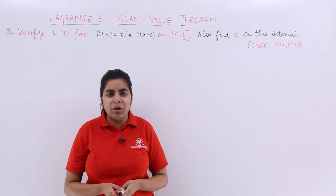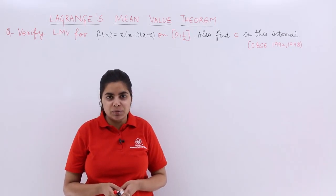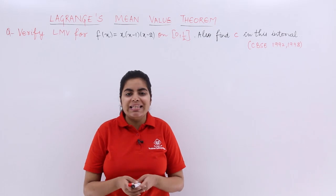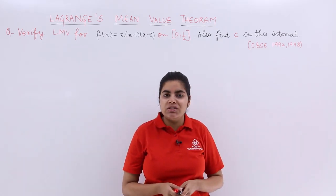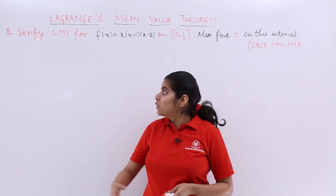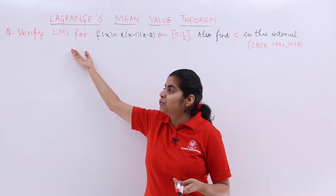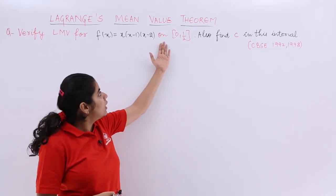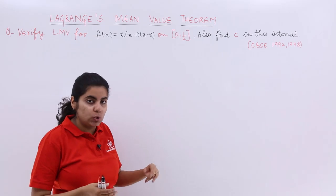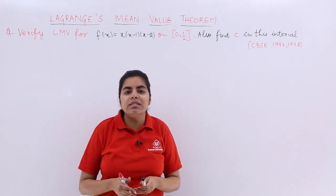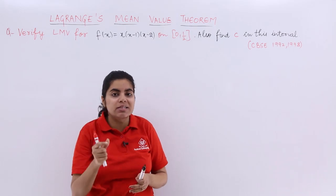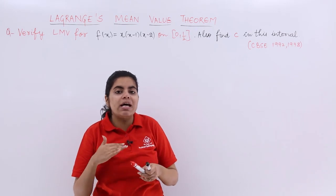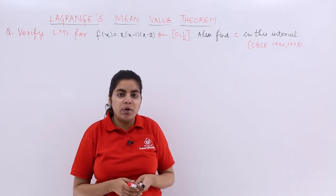This video focuses on the first numerical problem of Lagrange's Mean Value Theorem. The problem has been asked in previous year examinations of CBSE and some other state boards — in CBSE it was asked in the years 1992 and 1998. The question says: verify LMV (Lagrange's Mean Value Theorem) for f(x) = x(x-1)(x-2) on the closed interval [0, 1/2]. Also find C in this interval — C being the point where the tangent is parallel to the chord joining the endpoints of the curve.